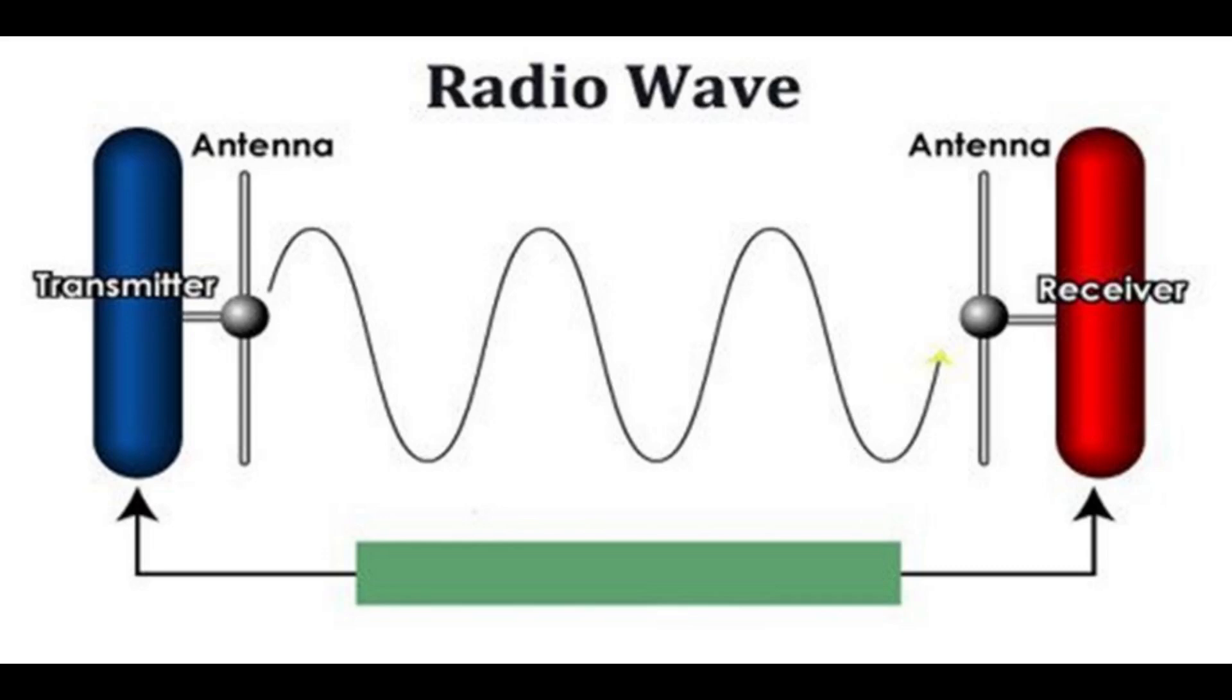The oscillating current pushes the electrons in the antenna back and forth, creating oscillating electric and magnetic fields, which radiate the energy away from the antenna as radio waves. The radio waves carry the information to the receiver location.